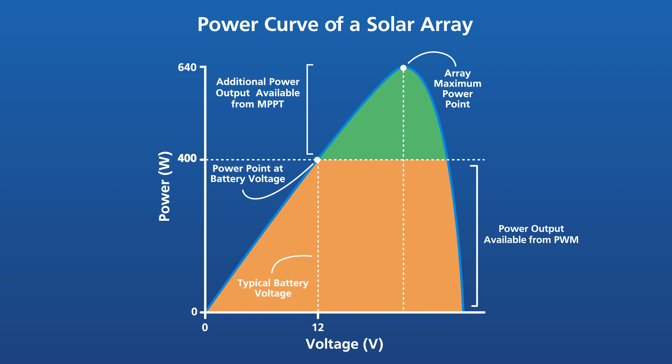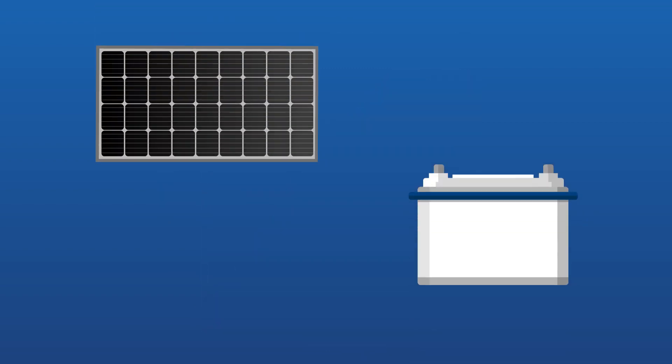With a PWM, the solar panel voltage will also lower to the battery voltage, but the battery charging current does not change, resulting in a less efficient energy transfer. Let's take a look at our example.